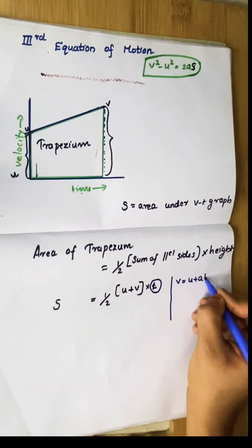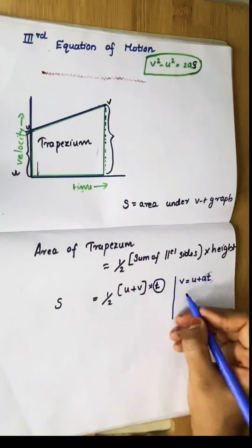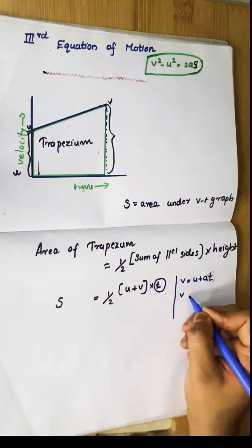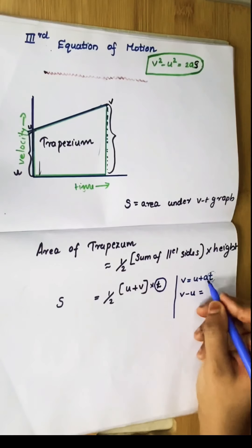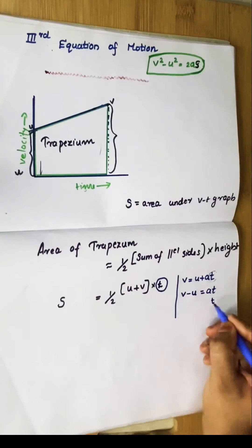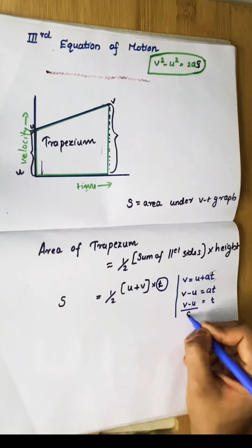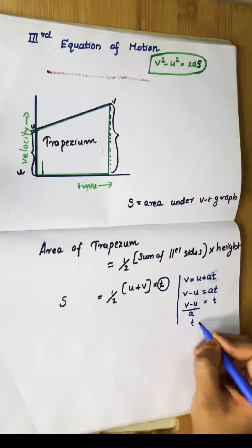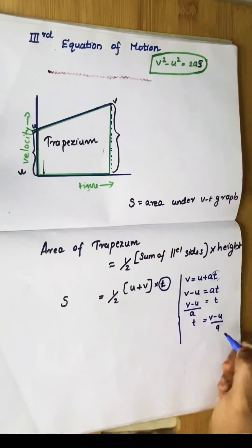Now we can replace t using the first equation of motion: v equals u plus at. Rearranging, v minus u equals at, so t equals (v minus u) divided by a.